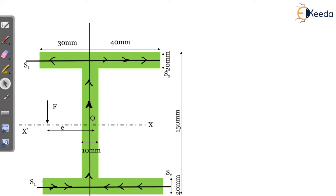How do we calculate the shear center for such a section? Here are a few terms you should understand. S1 is going in this direction and S2 is going in this direction. One flange has a size of 30 mm and the other is 40 mm.